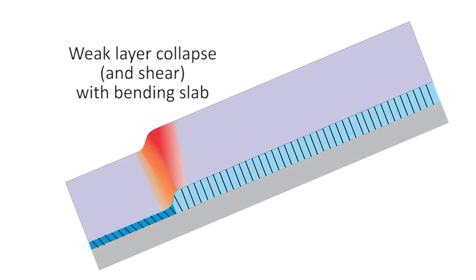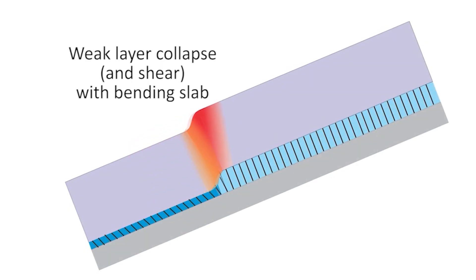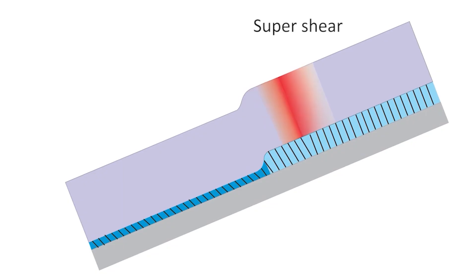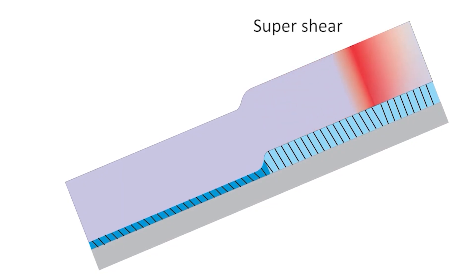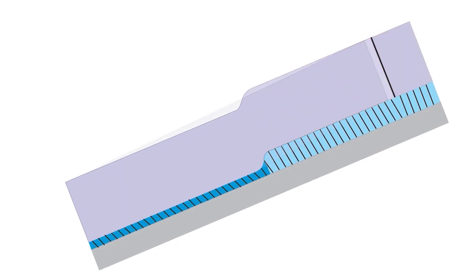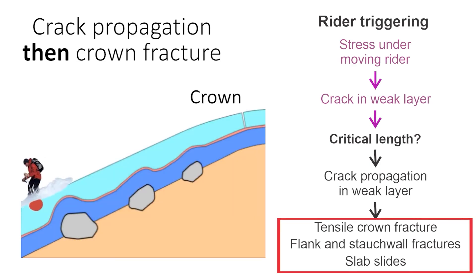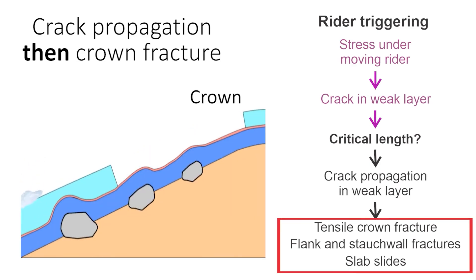After that, the crack changes into high gear, which is called super shear. During super shear, the crack speed can exceed 100 meters per second. At some point upslope of where the crack initiates, the slab fractures in tension, which is called the crown.